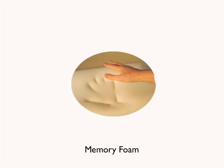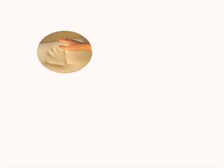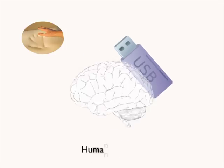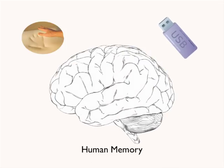Let's talk about memory. You've heard of memory foam — a material that retains imprints when pressure is applied. You've also heard of memory found in computers or jump drives; this memory is digital data stored as a result of electronic encoding. But what is human memory, and how is it created?